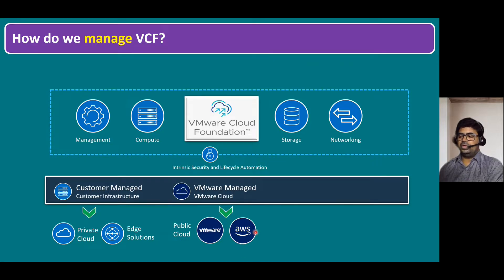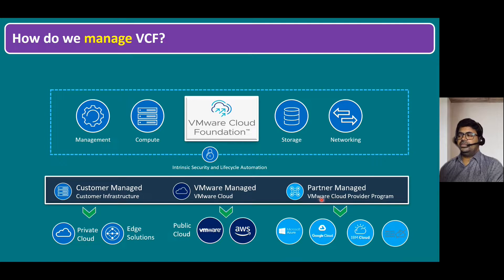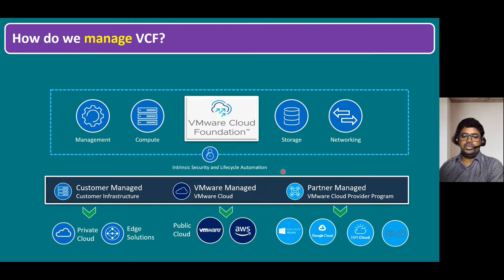For public cloud services like a hybrid cloud solution such as VMC on AWS, we don't need to worry about the back-end infrastructure — it's completely taken care of by VMware, and we pay only for service usage. A third scenario is partner-managed, through the VMware Cloud Provider Program. Certified partners include Microsoft Azure, Google Cloud, and IBM Cloud, and any other certified VCPP partners are also eligible to run the VCF product.